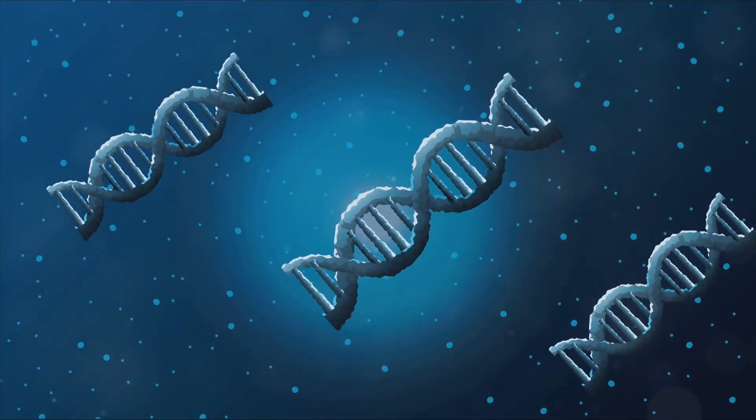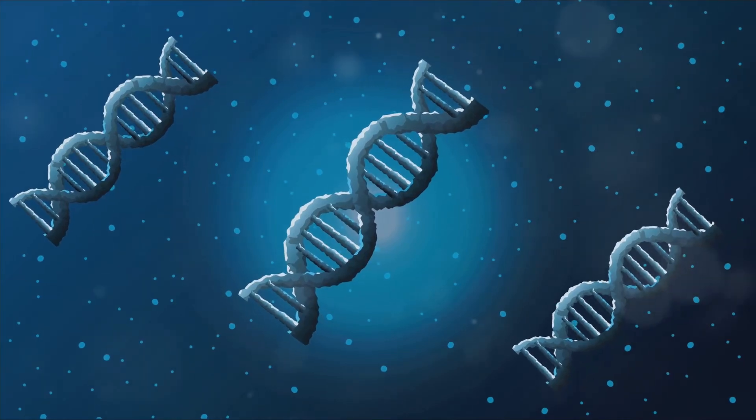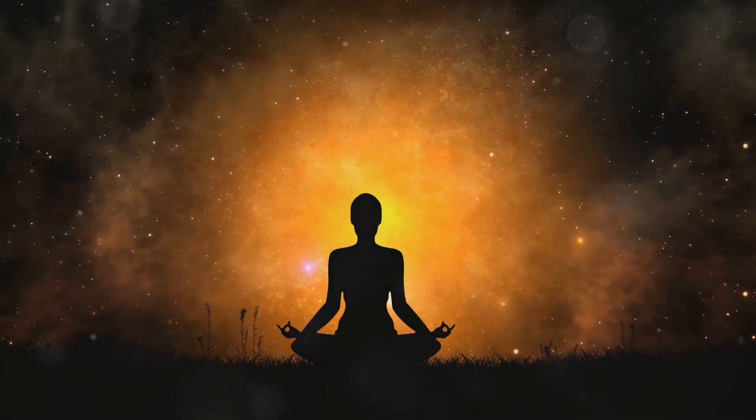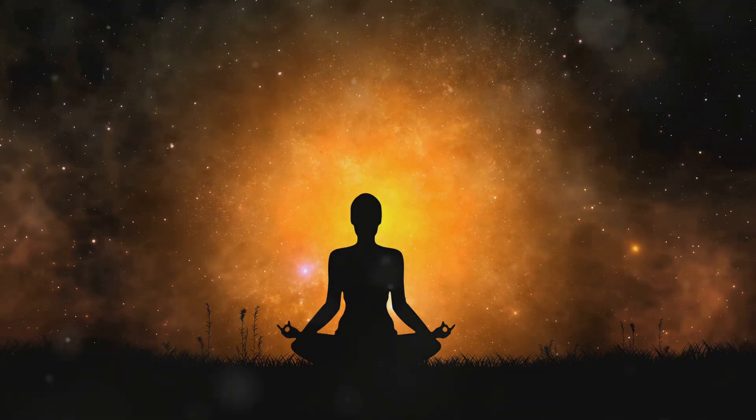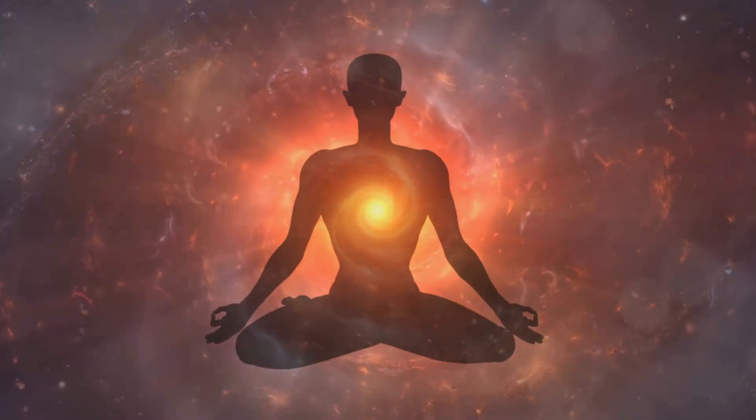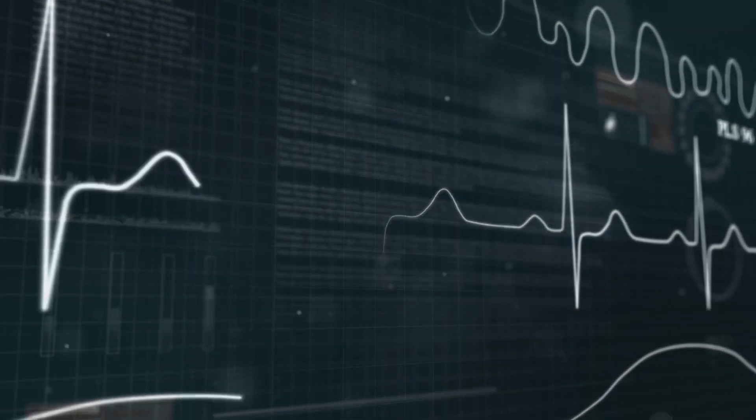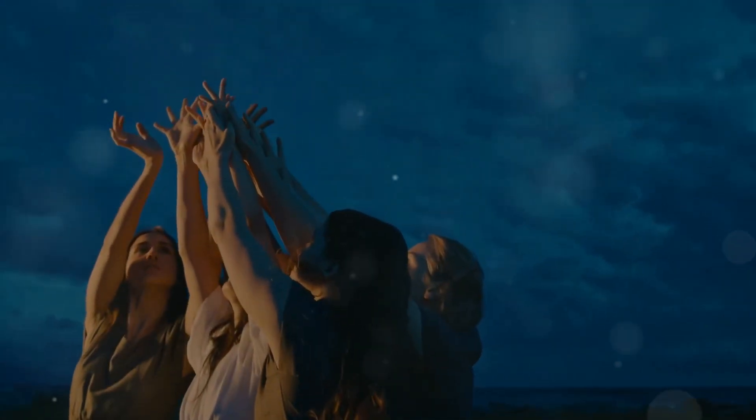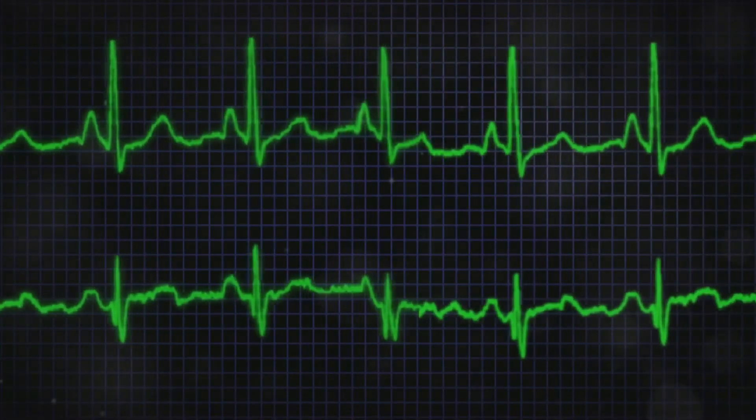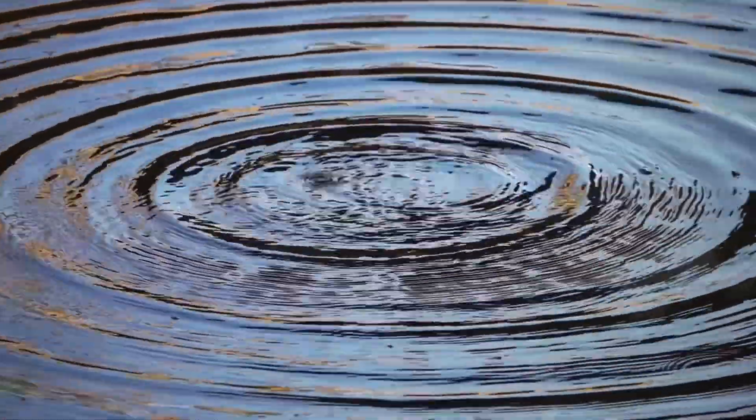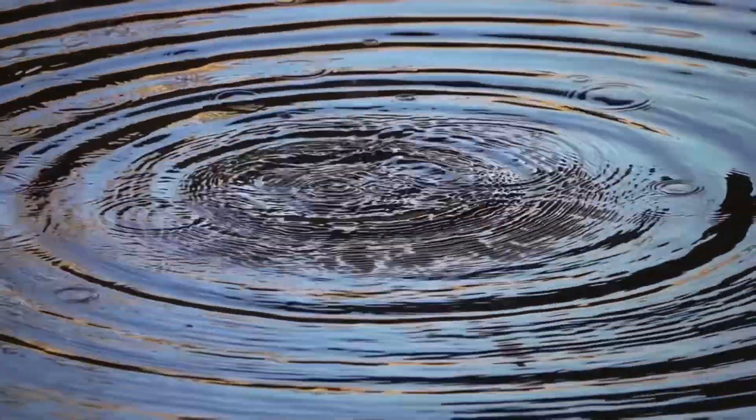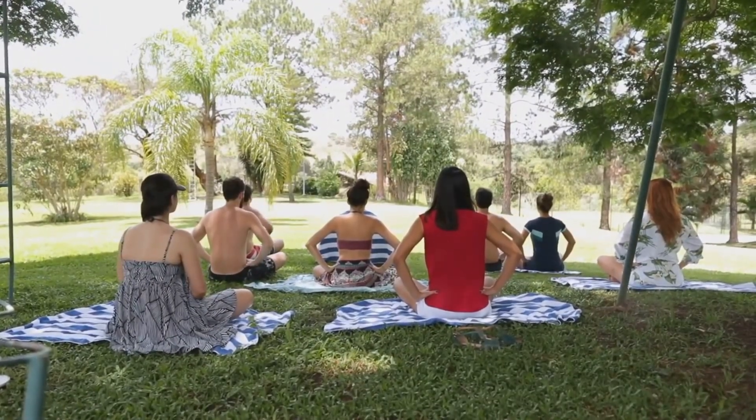If our DNA is a fractal antenna tuning us into the symphony of the universe, then the key to unlocking our potential might lie in achieving coherence, in aligning ourselves with the harmonious frequencies of the cosmos. Studies show that positive emotions like love, gratitude and compassion make our heart rhythms more coherent. This coherence influences our well-being and the world around us. Imagine a world where we radiate love and compassion, harmonizing our frequencies with the universe. The journey of unlocking our DNA's secrets is just beginning.